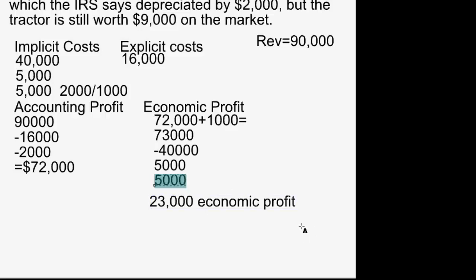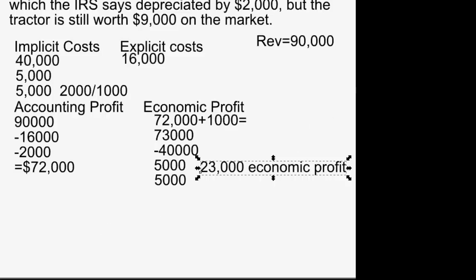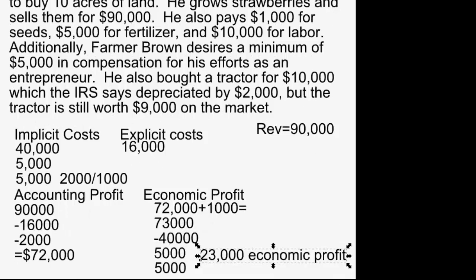Now let's go through one other part of this story — a particular example that was mind-blowing when I first heard it. Right now Farmer Brown is making $23,000 in economic profit. Suppose absolutely nothing changes, but we're 10 years in the future — nothing changes except the land that Farmer Brown bought for $100,000, taking that money out of the bank to buy 10 acres.